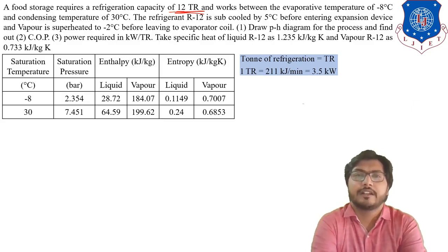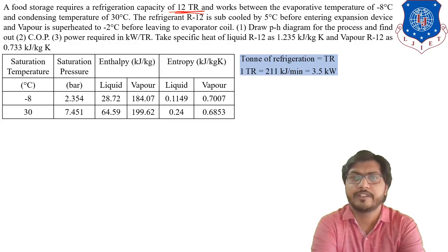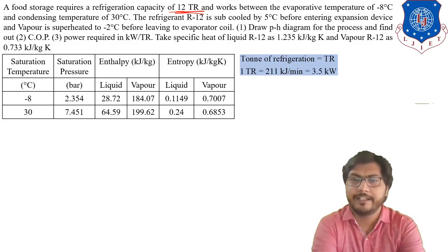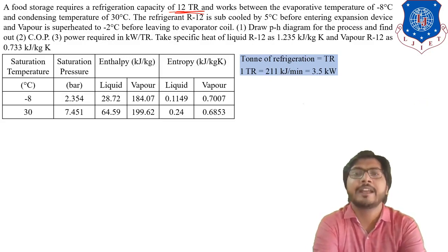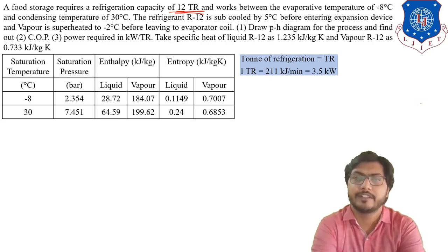First, the definition of ton of refrigeration — TR means ton of refrigeration. One ton is equal to 211 kJ per minute, or we can say 3.5 kW. So for this problem, the plant capacity is 12 TR.